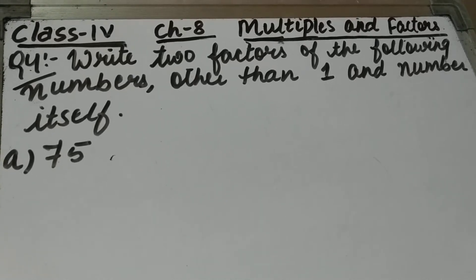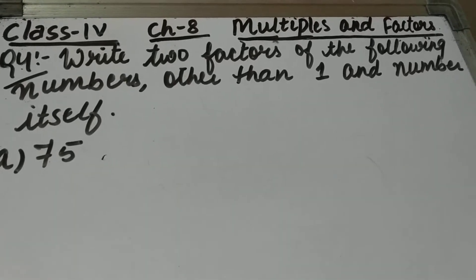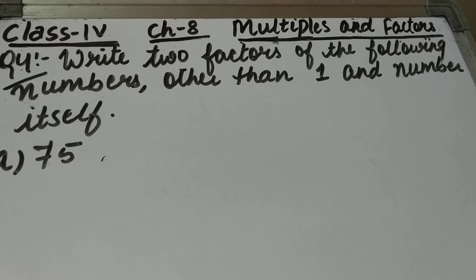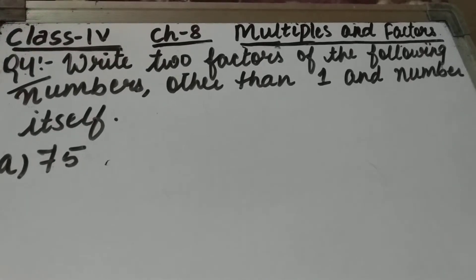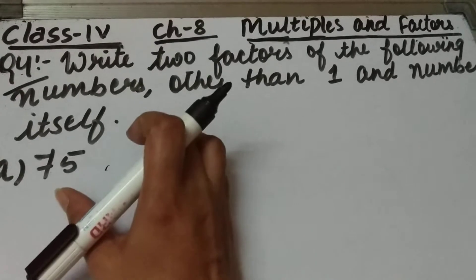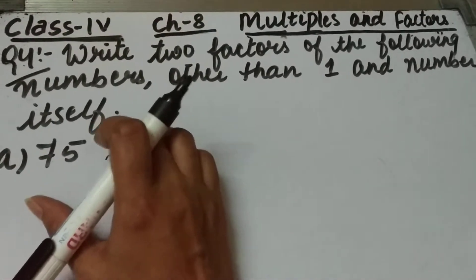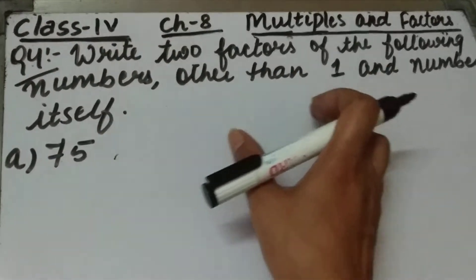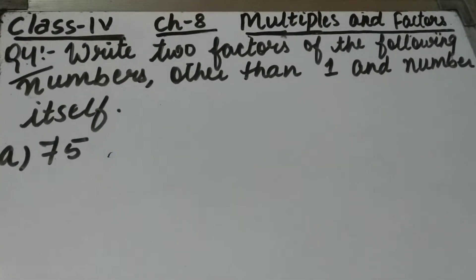Let's start question number 4 of exercise 8B. The question is: write 2 factors of the following numbers, other than 1 and the number itself. We have to find 2 factors but not 1 and the number itself.